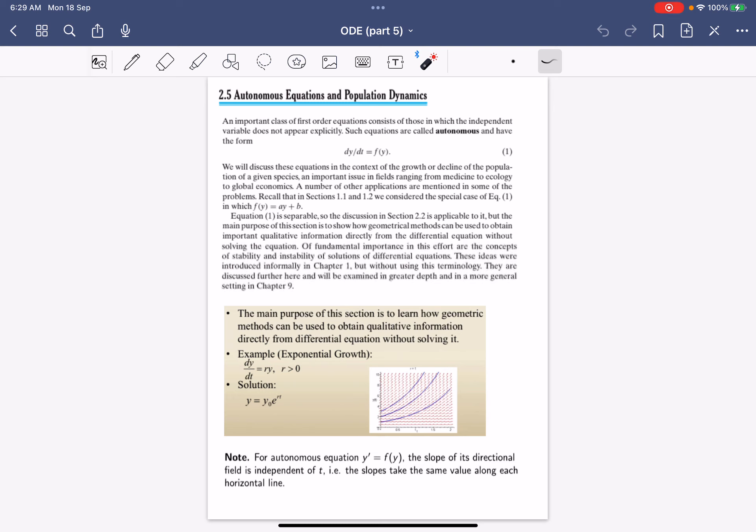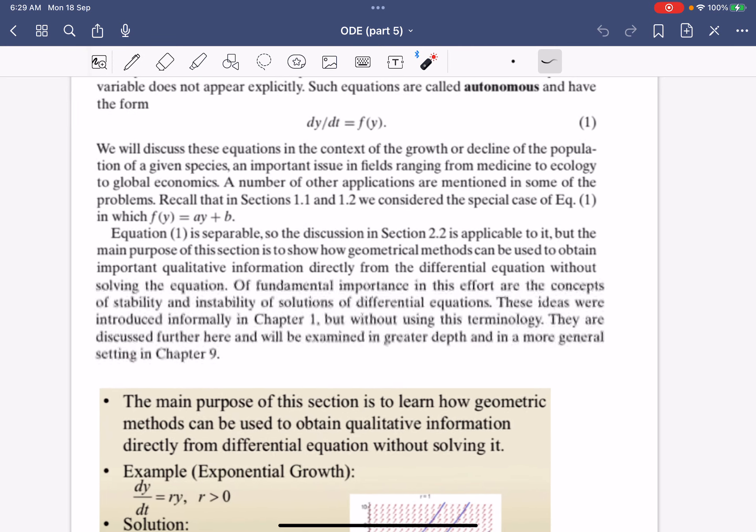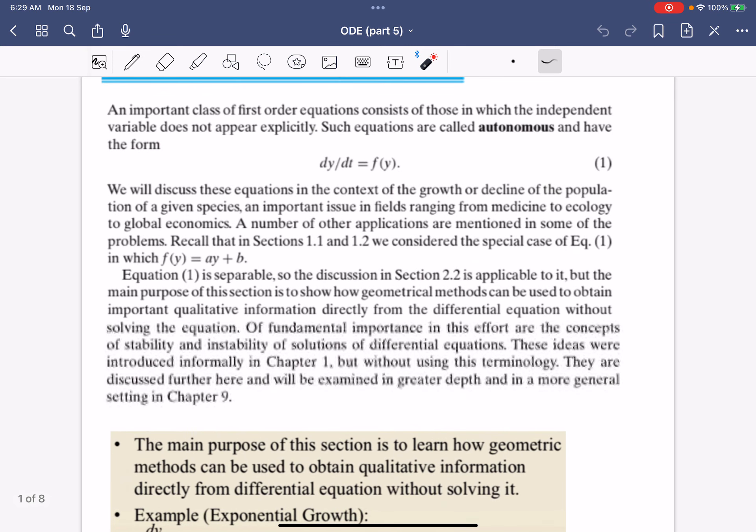This class of equation is known as an autonomous equation, and they are of the form dy/dx equals a function purely in terms of y. So there's no explicit t terms here, or you can think of the t terms as 1, so it's multiplied by 1.